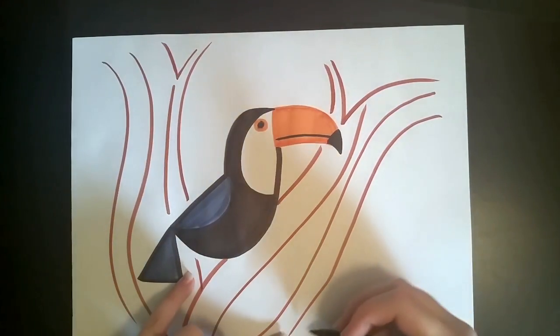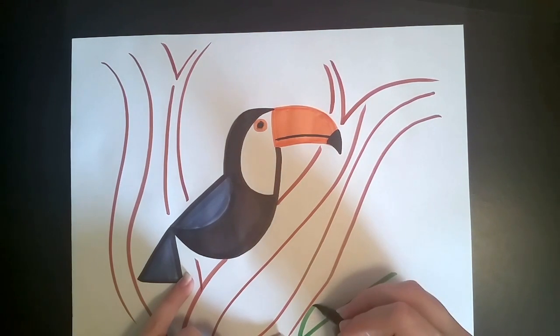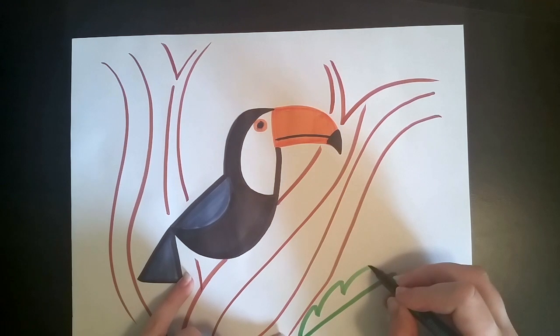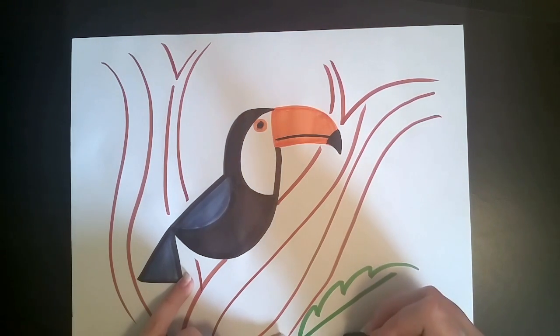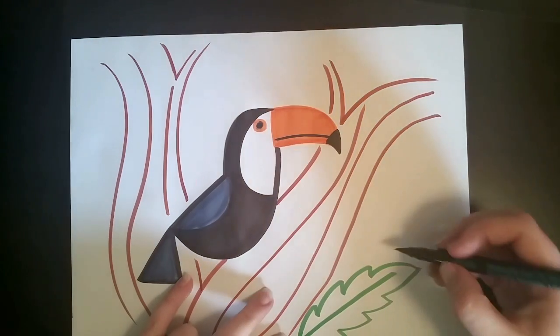Go ahead and grab your green marker, and if you want to be really fancy, use lots of different shades of green. Draw some straight lines, and then kind of this scalloped edge. See how I do that? It's like curve, line, curve, line, curve, line. And then on the other side. And that's a big, giant leaf.